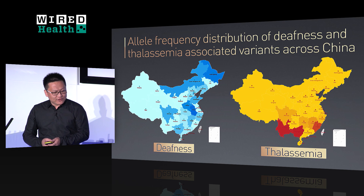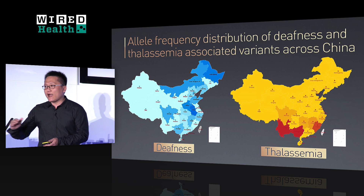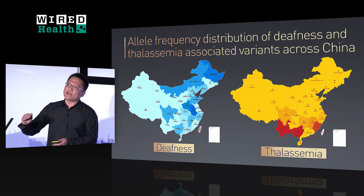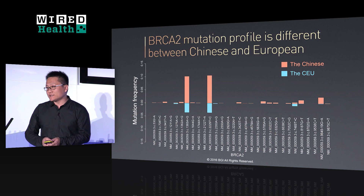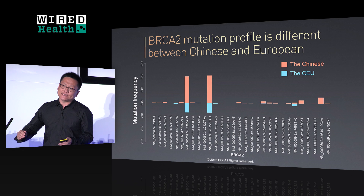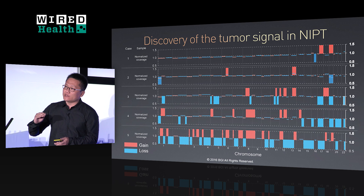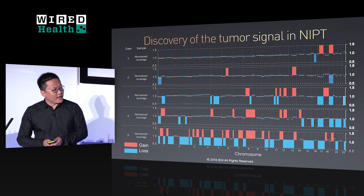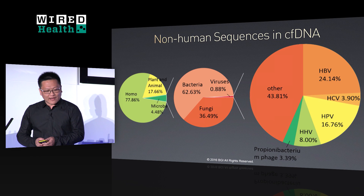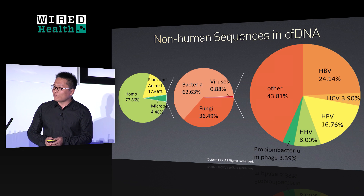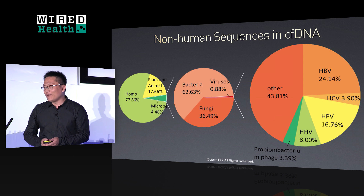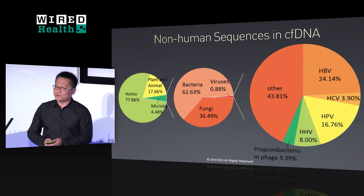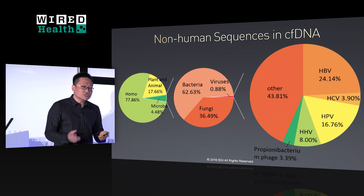The technology of NIPT is low-coverage whole-genome sequencing. The result means little for individuals, but means a lot for population study. By using big data analysis, we found many interesting conclusions. For example, in China, August is the month when most Chinese women get pregnant. In Hunan province, there is a higher chance for women to conceive twins. The allele frequency distribution is different across China — carriers with deafness genes are higher in the north, while thalassemia carriers are higher in the south. The mutation profile is also different between Europeans and Chinese. Whenever we find tumor signals in NIPT tests, the probability is about one in a thousand. In the total cell-free DNA from pregnant women, we also found trace DNA from plants, animals, microbiome, bacteria, fungi, virus, even mosquitoes.